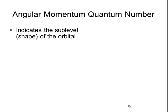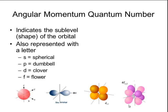The second type of quantum number is called an angular momentum quantum number. And this indicates the sublevel, or shape, of the orbital. It is generally represented with a letter. There are four different sublevels, or shapes, that any orbital can have. There are s orbitals, which have a spherical shape, represented here in red.